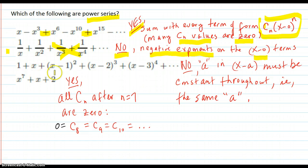This one, (x minus 1), (x minus 2), the a is changing, so that's not allowed. The (x minus a) must be constant throughout, that is, using the same a. These a's are changing.